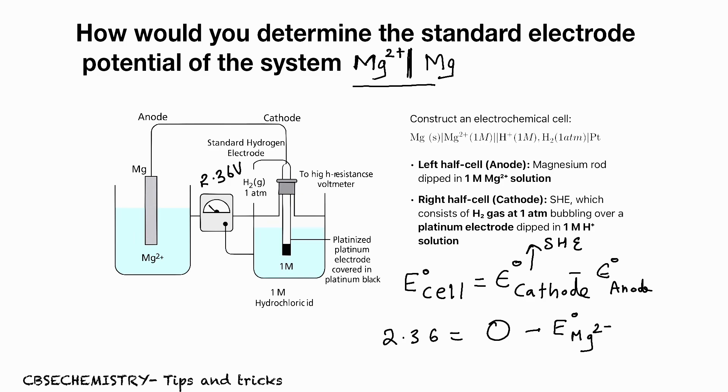So what is that value? You can see E°Mg²⁺/Mg is equal to minus 2.36 volt.